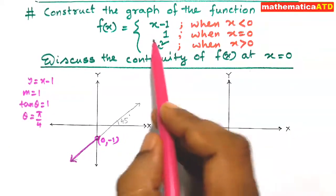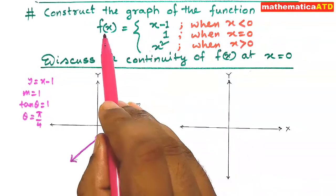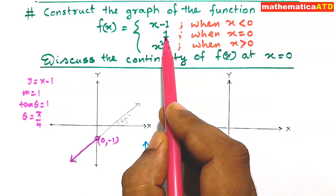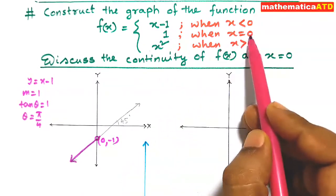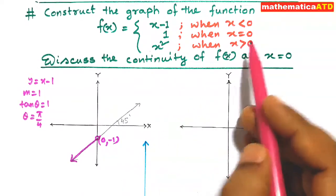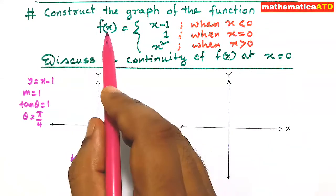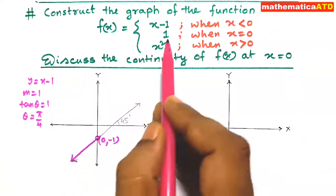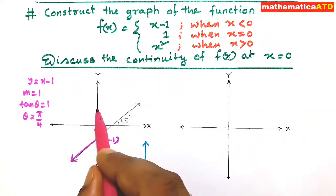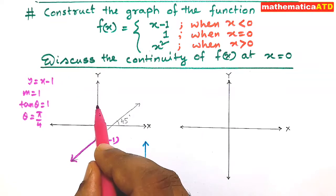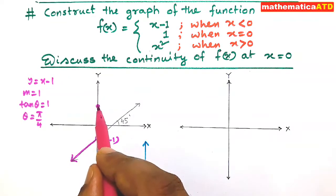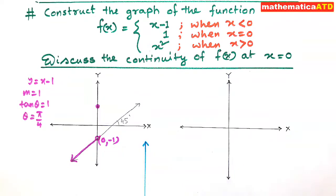The second piece is very simple: f(x) = 1, which is a constant when x is equal to 0. At the point x = 0, the value of the function f(x) is 1. This is represented as a solid circle — this point is included.